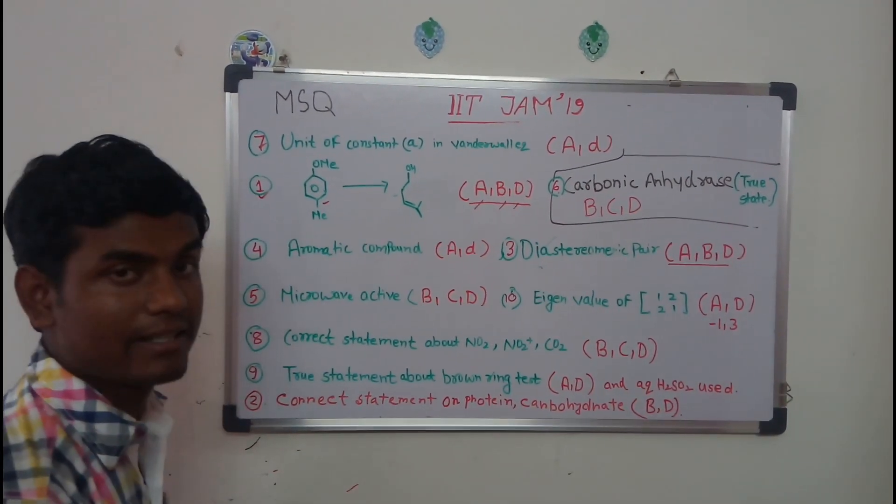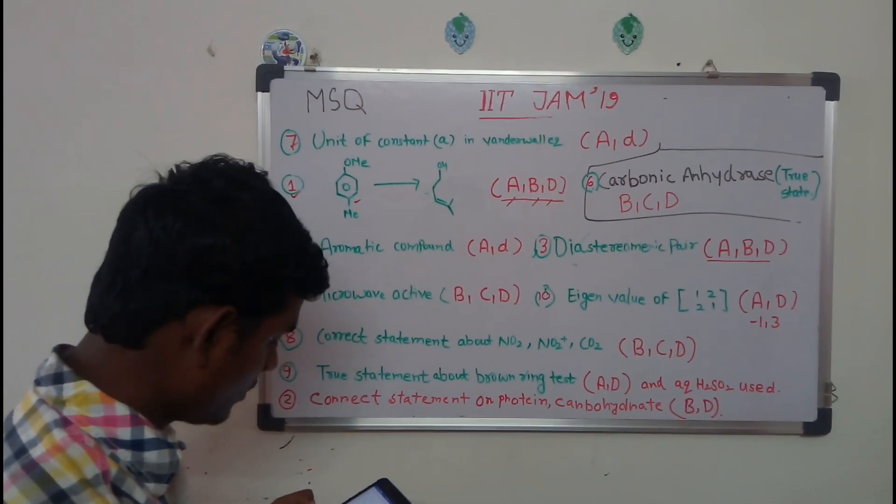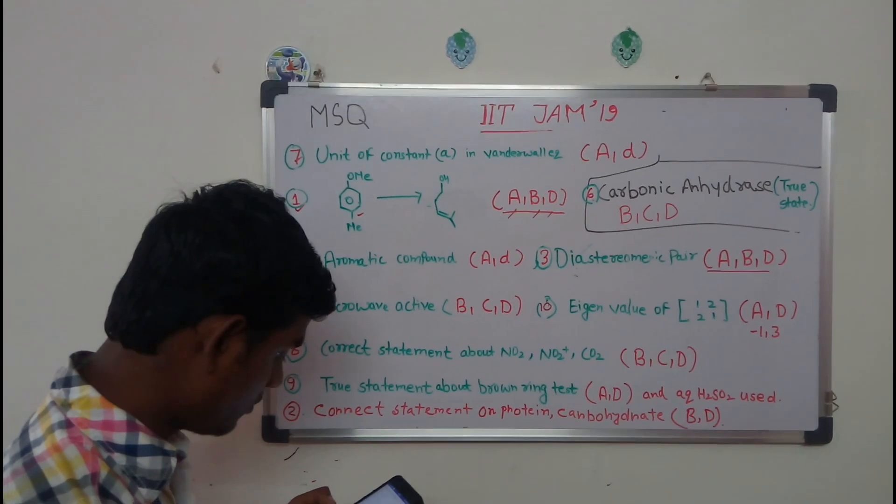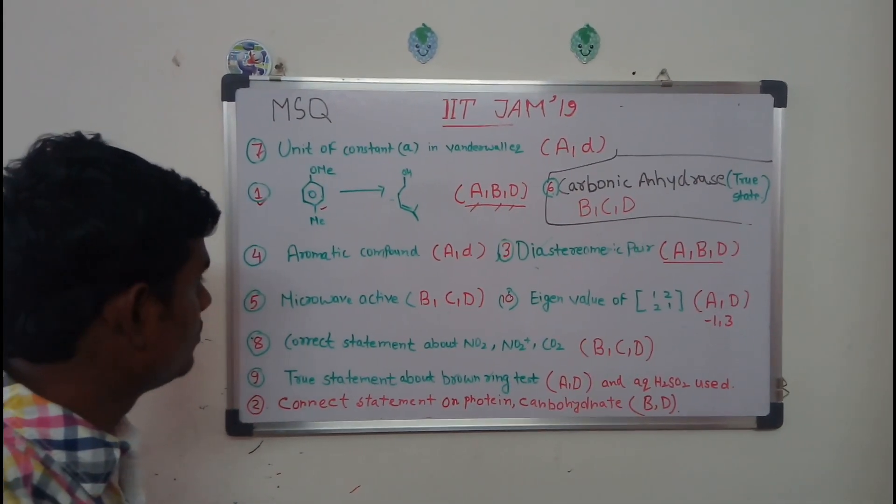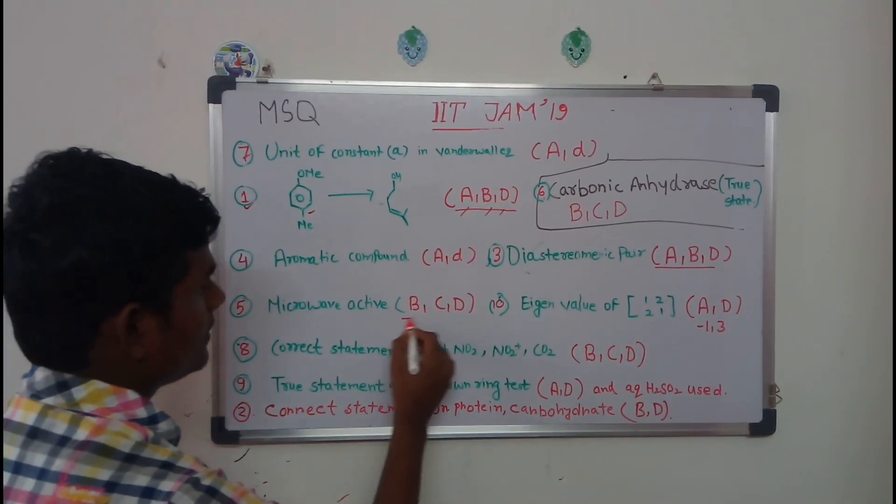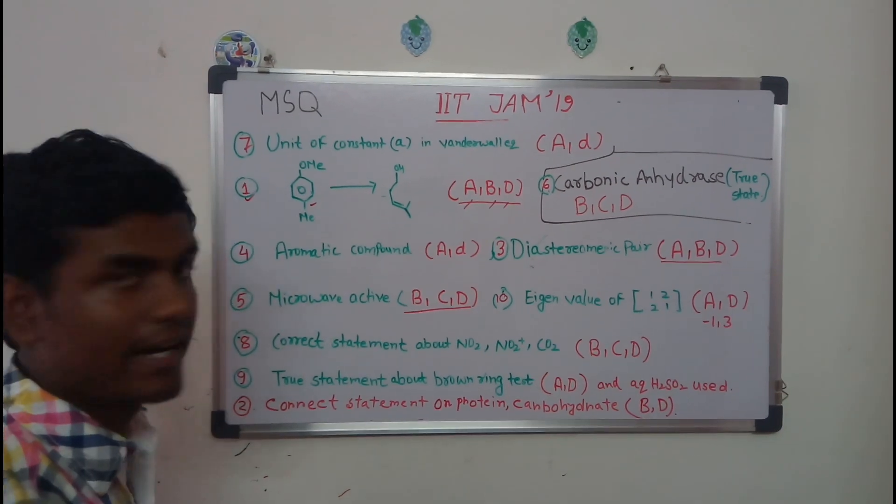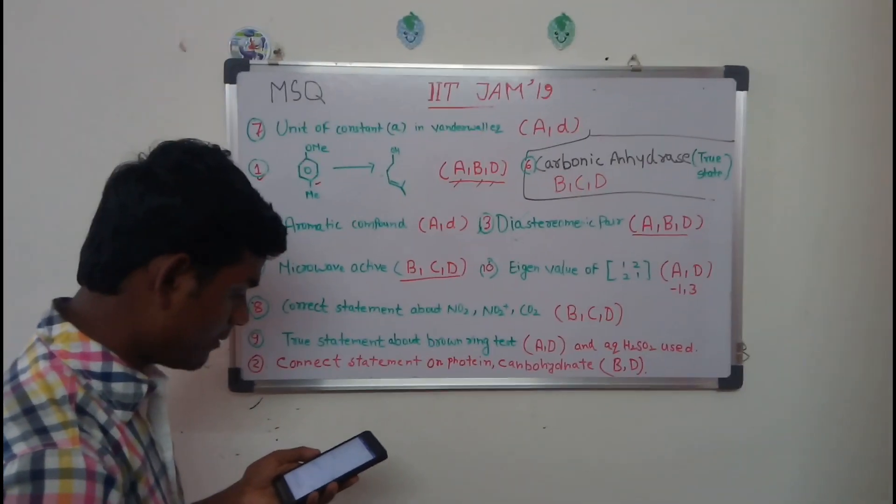So microwave active molecules - what are the options? Trans-dichloroethene, one-two-dinitrobenzene, three-methylphenol, and para-aminophenol. As you know, those having permanent dipole moment will be IR active, and you can easily confirm that B, C, D are the correct answers.